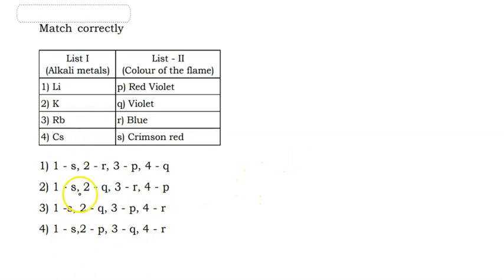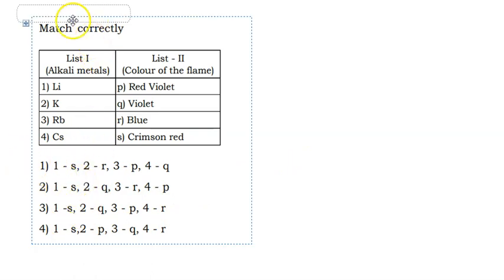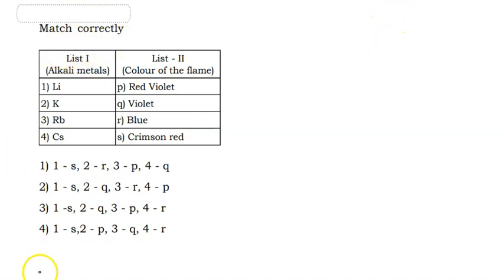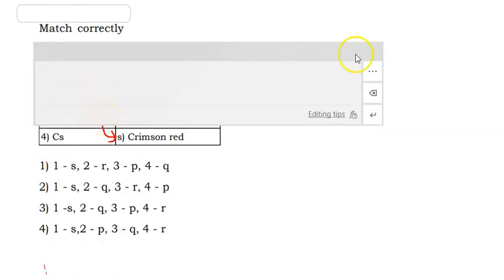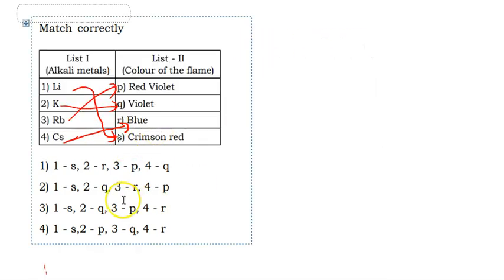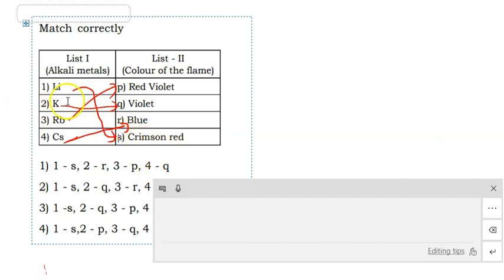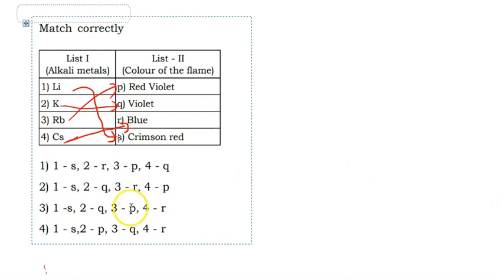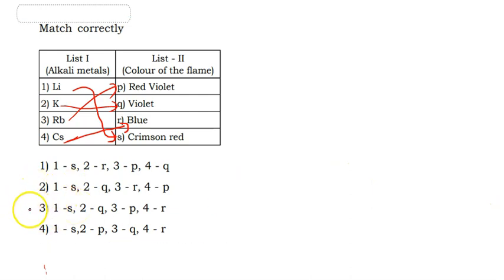Match the following — List 1: alkali metals; List 2: color of the flame. Lithium gives crimson red, potassium gives violet, rubidium gives red violet, and cesium gives blue. The correct answer is option 3.